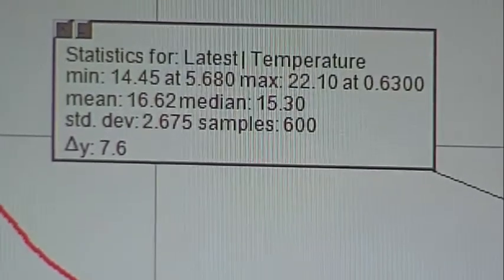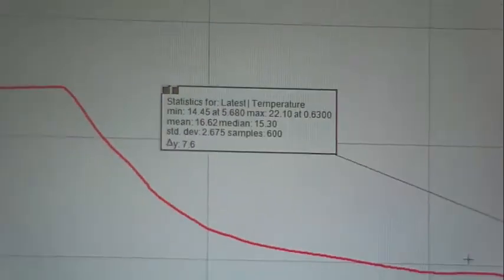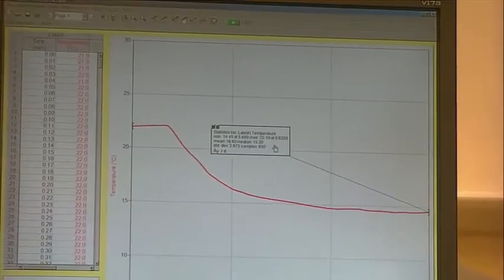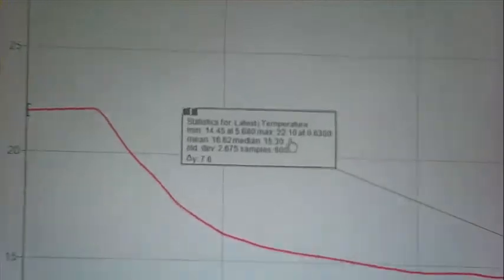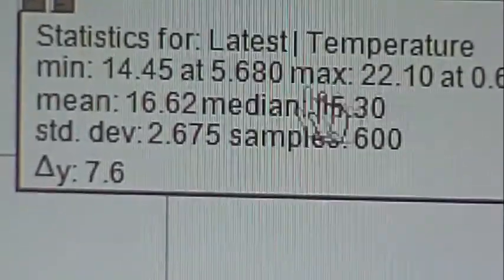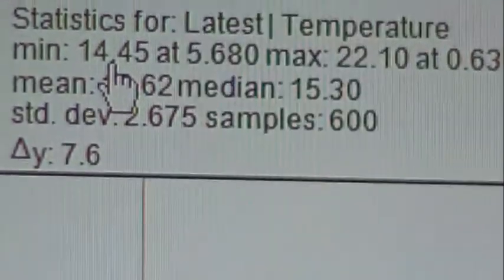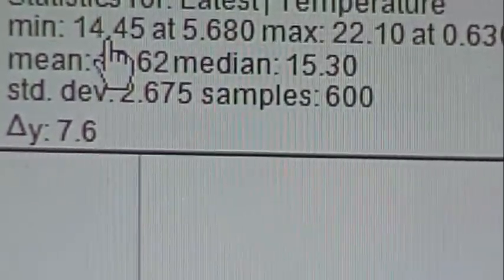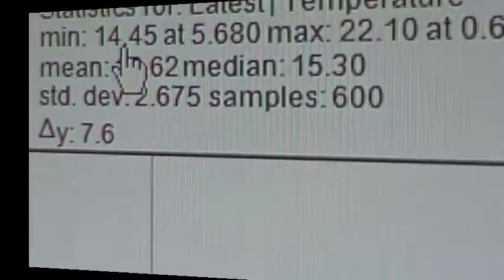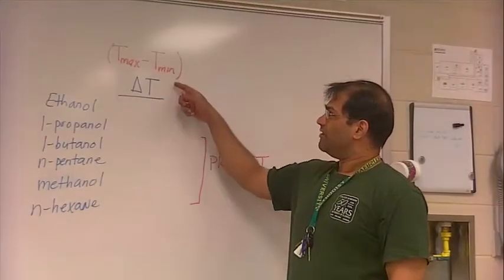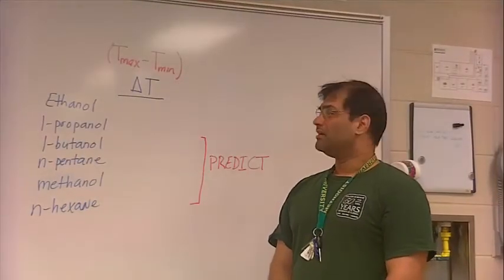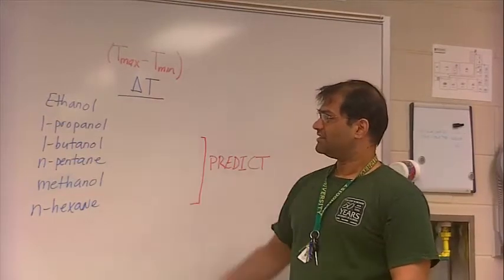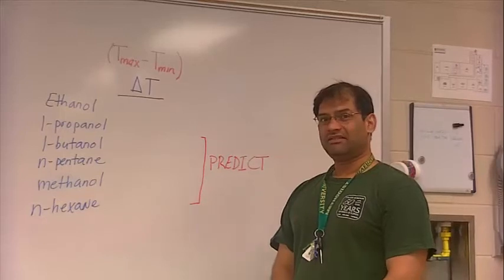So you want to collect this data for ethanol, then propanol, and all your solvents. You also will have to do some predictions and determine the delta T. So the delta T here for ethanol would be 22.1 degrees minus 14.45 degrees. Get the delta T for ethanol, and get the delta T for all the solvents.